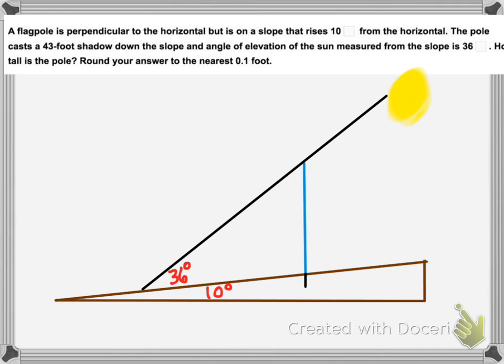Okay, so we know that's 36 degrees. Now we use a little bit of information from the picture. See, I can continue to drop that flagpole down to the horizontal, and that will form for me a little right triangle there, and that little right triangle is going to have a 10 degree angle.